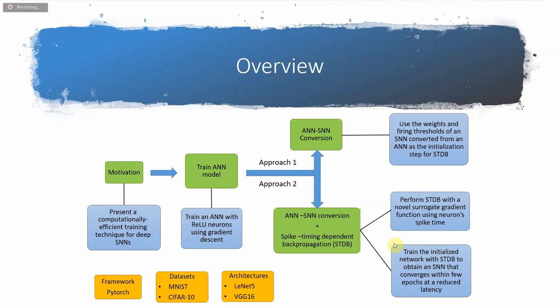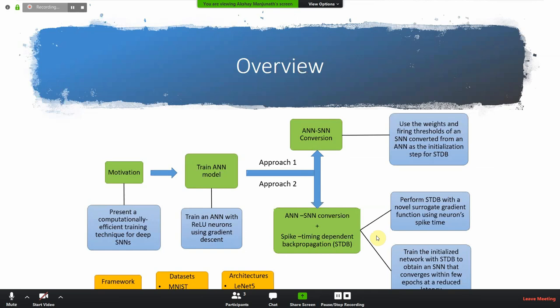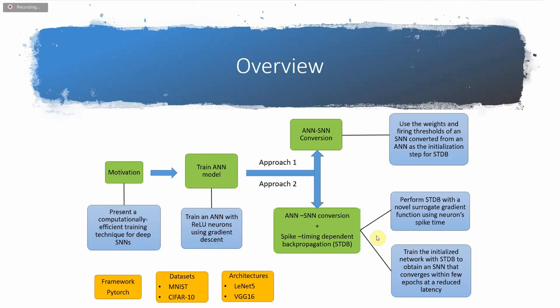We first train an ANN model with value neurons using gradient descent and we employ two approaches. The first one is ANN to SNN conversion via threshold balancing. This technique estimates the firing threshold of each of the layers, and the details will be explained later by my colleagues. The second technique employs the first technique and additionally performs spike timing dependent backpropagation, which uses a novel surrogate gradient function using neuron spike time.